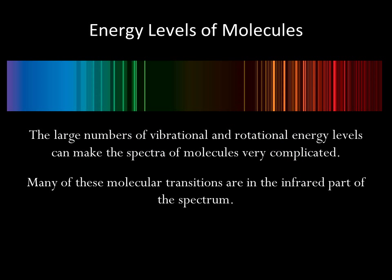The energy level spacing in molecules are usually smaller than in atoms, and therefore molecules produce lower energy photons, often in the infrared. The energy levels also tend to be bunched up more closely together than in atoms. So molecules produce spectra with many sets of tightly bunched lines, called molecular bands.